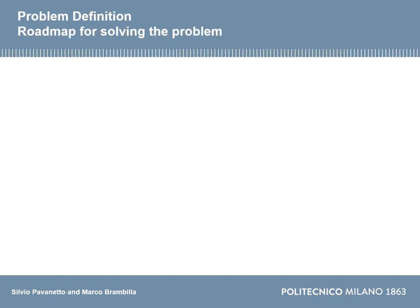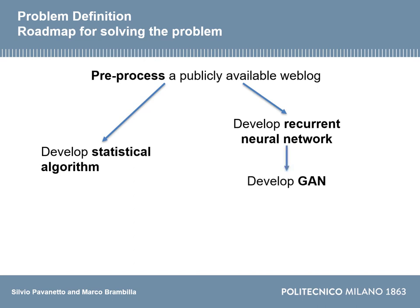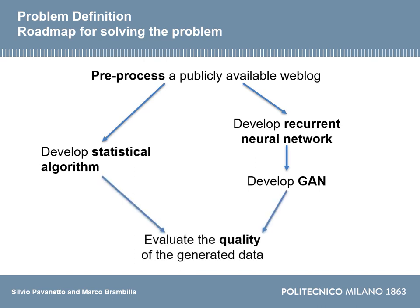The roadmap for solving the challenges mentioned is the following. We start with a pre-processing algorithm on a publicly available weblog. Then we develop our baseline, which is a statistical algorithm. Then we start with the deep learning algorithms — first a recurrent neural network, then a generative adversarial network. Once all algorithms are developed and tested, we proceed with the evaluation of the quality of the generated data.